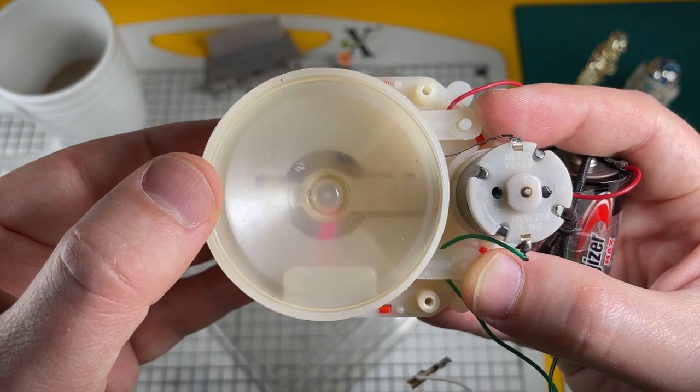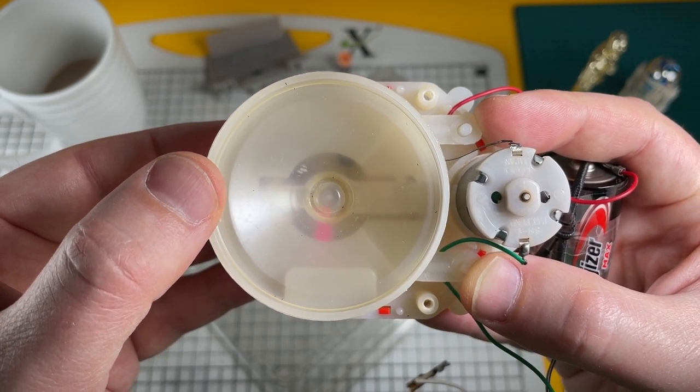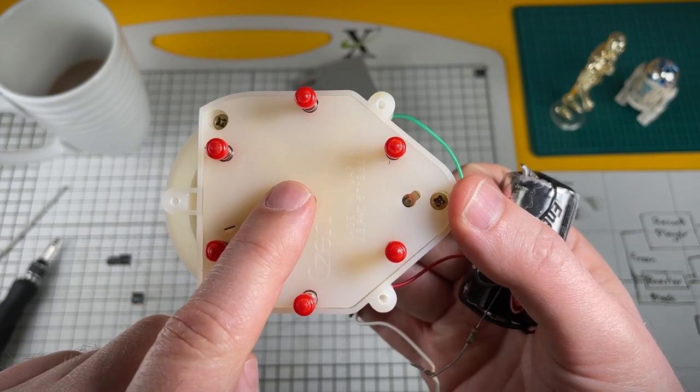And then once it hits that metallic strip and breaks the circuit the motor switches off. Let's test these buttons starting at the top.